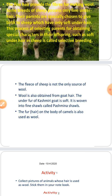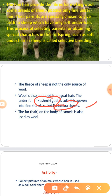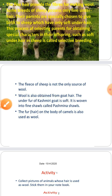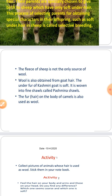The fleece — meaning the hairs — of sheep is not the only source of wool. Wool is also obtained from goat and camel. The under-fur of the Kashmiri goat is very soft and is woven into fine shawls called Pashmina shawls. The fur on the body of a camel is also used as wool.